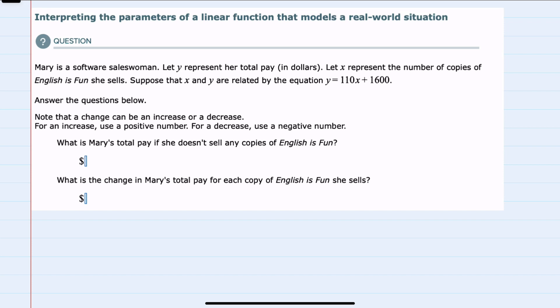In this example, we're told that Mary is a software saleswoman. Let y represent her total pay in dollars. Let x represent the number of copies of English is Fun she sells. Suppose that x and y are related by the equation y equals 110x plus 1600. And we're given some questions to answer and told that responses can be positive or negative.